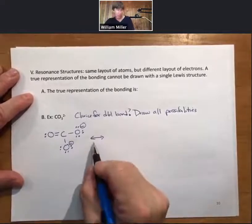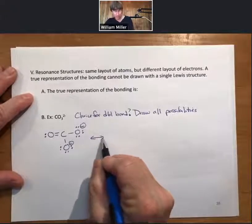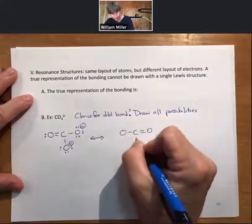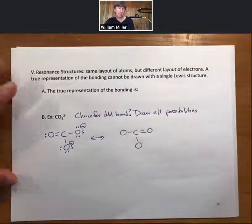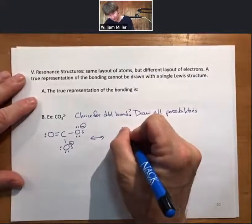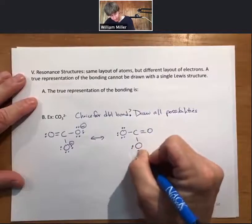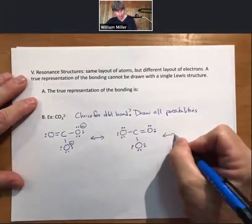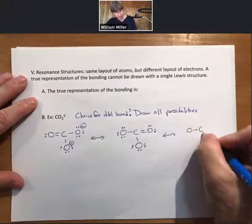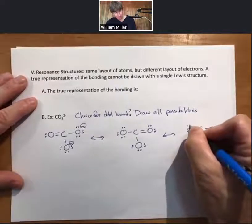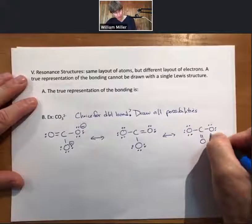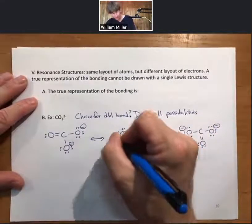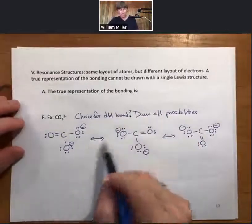Drawing all resonance structures: leave the atoms where they are and move the double bond. Always draw in all the electrons. The last resonance structure has the double bond in the third position. There are three resonance structures for carbonate, each with the appropriate formal charges.